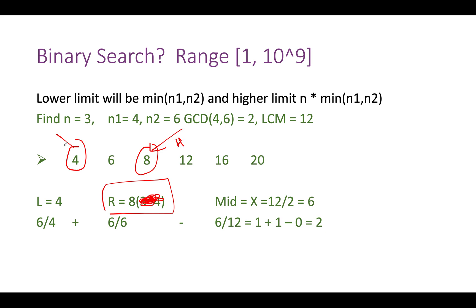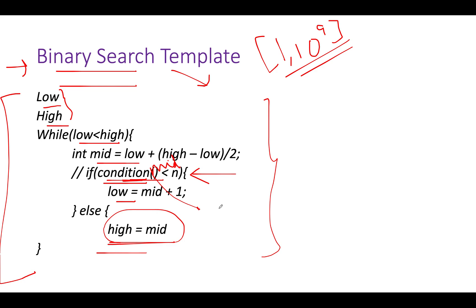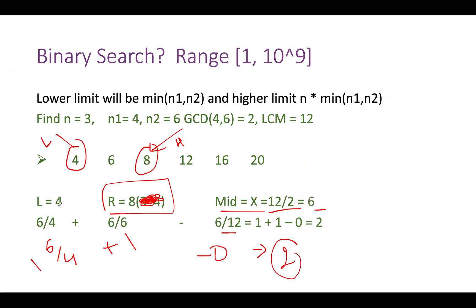Let's continue the process. Middle element turns out to be 4 plus 8 by 2, which is 6. Let's calculate the factor count: 6 by 4 is 1, 6 by 6 is 1, 6 by 12 is 0. So 1 plus 1 minus 0 is 2. The factor count is 2, the value of n is 3, so 2 is less than 3. That means we update our low to mid plus 1, which is 7. Low gets updated to 7, high remains at 8.